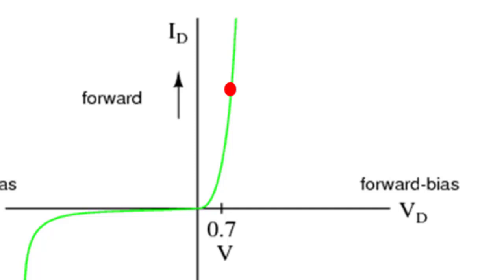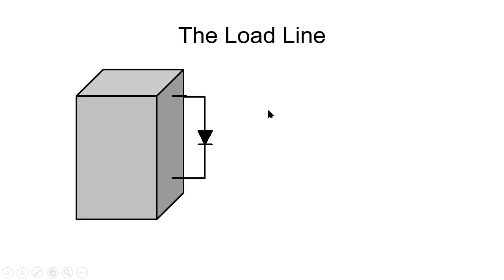When a small oscillating signal is superimposed so that the operating point stays within a small neighborhood of the exponential, we deem that the small signal. Observe that to the small signal, the curvature of the exponential is not evident — all it sees is a straight slanted line, the tangent to the exponential. All it sees is a resistance: the inverse of the slope of that tangent.